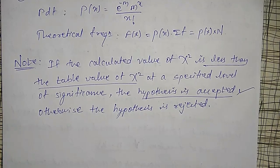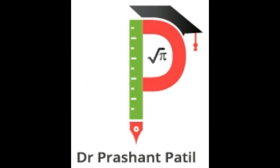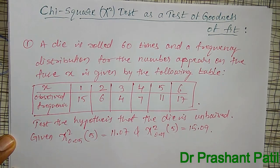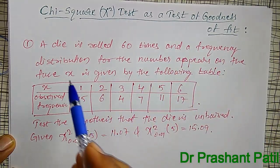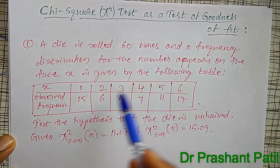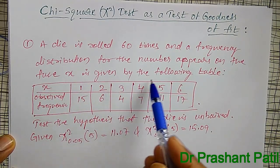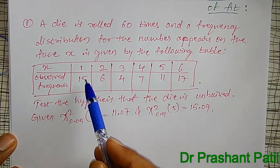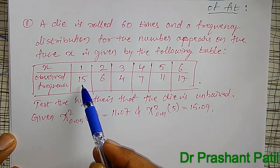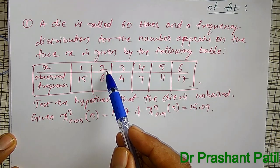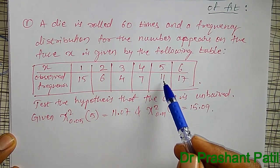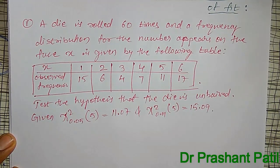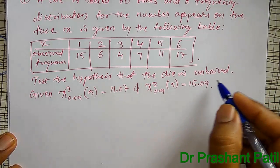This is the basic concept of chi-square. Now let's do a simple example. A die is rolled 60 times and the frequency distribution for the number of appearances on face X is given by the following table: face 1 appeared 15 times, face 2 appeared 6 times, face 3 appeared 4 times, face 4 appeared 7 times, face 5 appeared 11 times, and face 6 appeared 17 times. Test the hypothesis that the die is biased or not.